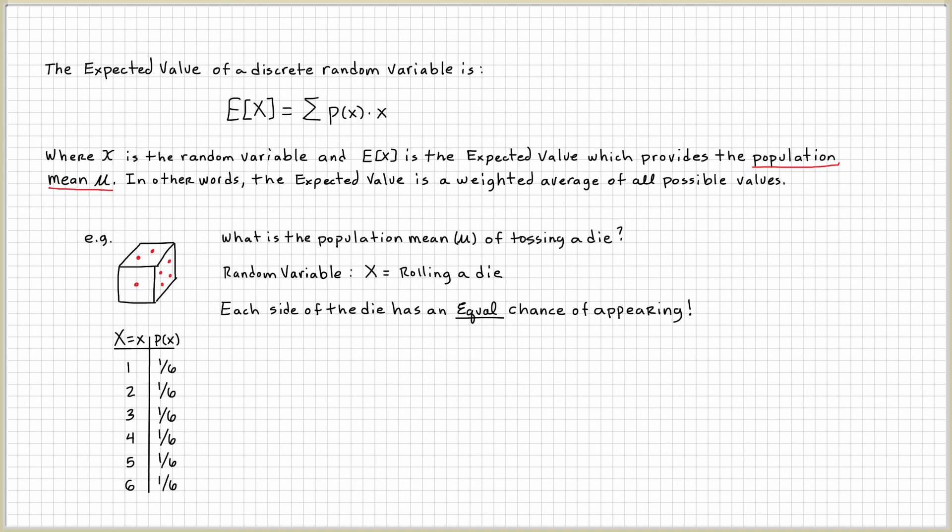What's the probability of six, tossing a six? It's going to be one over six. So you notice that when you add all the probabilities, it gives you 1, which is one of the definitions of a probability distribution.